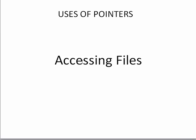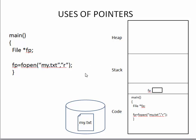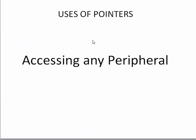The next usage of a pointer is accessing files. If you want to read or write data from disk, a file pointer is required. In C programming, when we want to open any file, we need a file pointer. Without a pointer, we cannot access a file on disk. So pointers are used for accessing data on external storage.